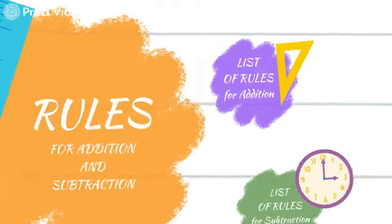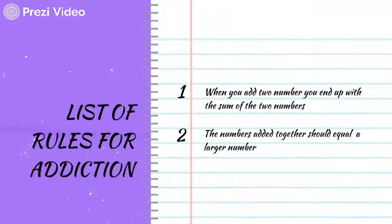First, we need to learn the rules. The rules for addition are pretty simple. When you add two numbers, you end up with the sum of two numbers. The second rule is the numbers added together should equal a larger number.